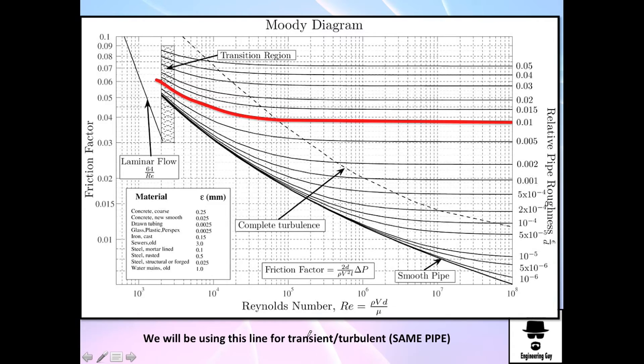For the transient turbulent, we already calculated the relative roughness, which was 0.01. So this line will govern the value. So we cannot go out of this line. If I choose this number, it's wrong. If I choose this, it's wrong. I can only choose on the red line.